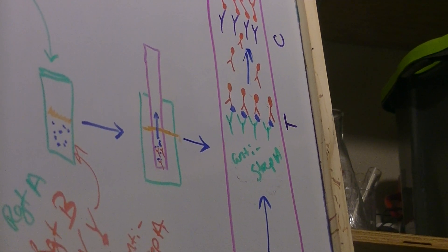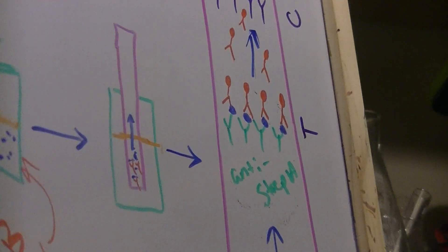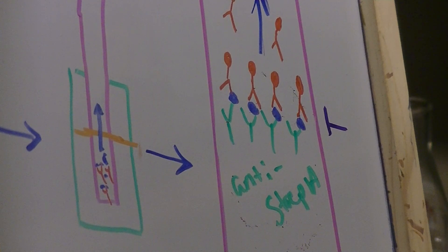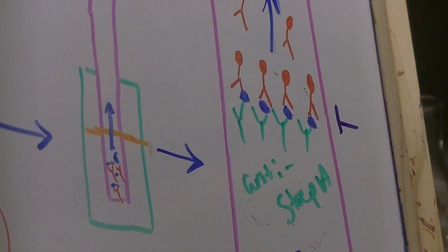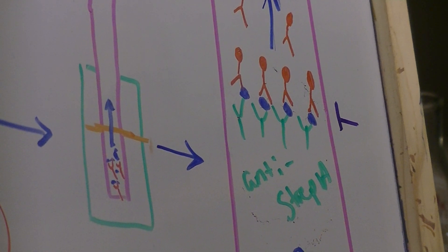As the sample travels through the strip from bottom toward the top, those antigens from the strep organism, if they are present, will stop in the testing area.